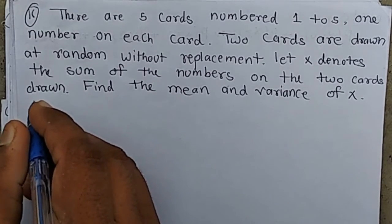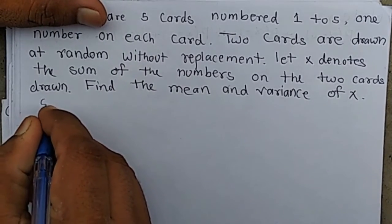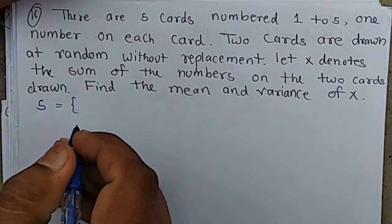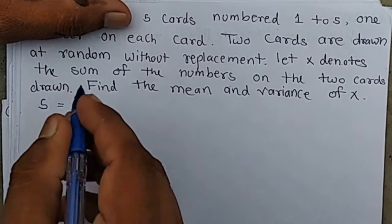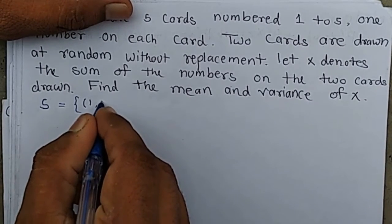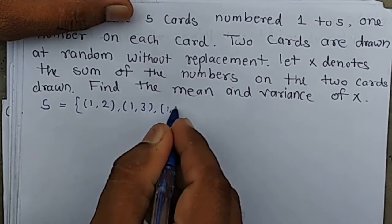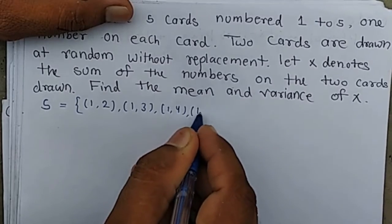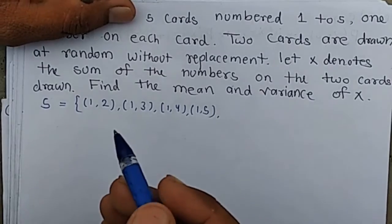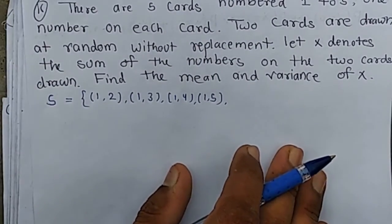First, we find the sample space of getting two cards one by one without replacement. The possibility of the first card being 1: the second card can be 2, 3, 4, or 5. It is not possible to get (1, 1) because the drawn card is not put back in the deck.